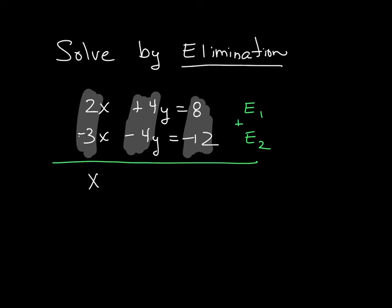The y's become 0. Negative 4 plus 4 is just 0, so they're gone. And then the 8 minus 12 is just going to give me a negative 4. I need to make sure that first x is negative because it's 2 minus a negative 3. So I have to divide both sides by a negative 1, and that leaves me with my first answer that x is equal to a positive 4.